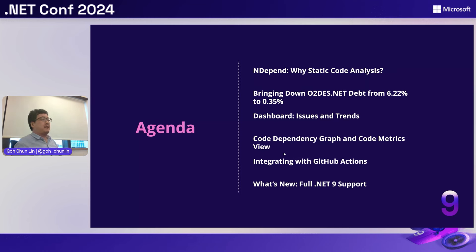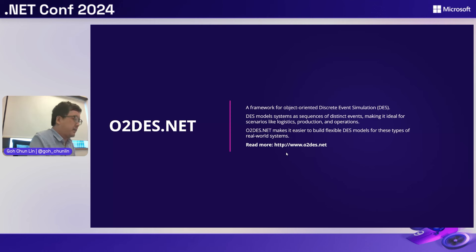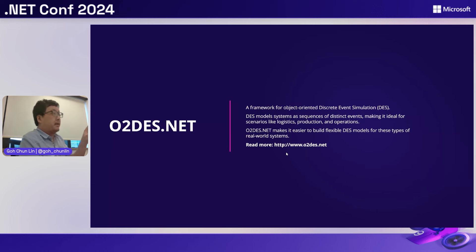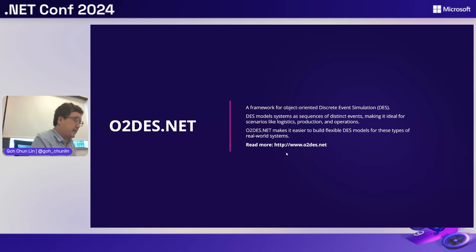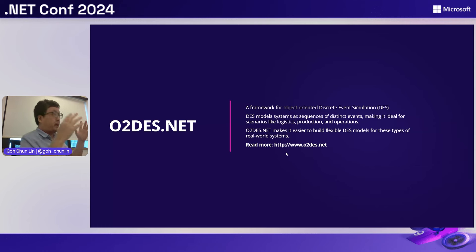So what is AutoDES.NET? Basically it's a simulation project done in C#. The main purpose is that it uses object-oriented principles to simulate real-time discrete event simulation. For those new to simulation, discrete event simulation means modeling a system as a sequence of distinct events. This makes it useful for real-life situations like managing a warehouse, factory operations, and organizing deliveries — actions happening one after another.